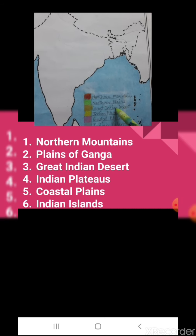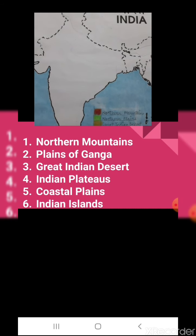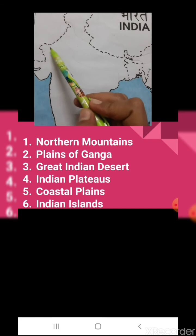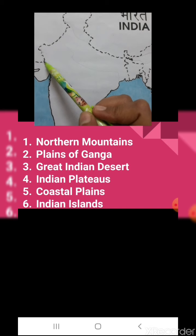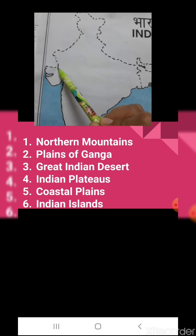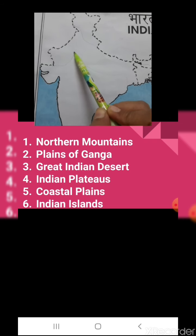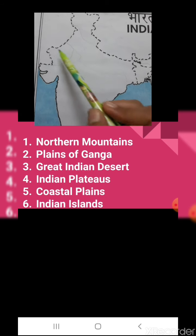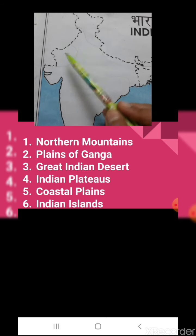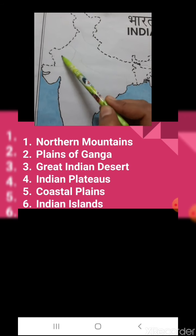Now we have great Indian desert — that is Thar desert. Thar desert is in which state? It is in Rajasthan. Rajasthan is here, and this is Gujarat. From this point draw till here — this is Thar desert. We have done three divisions now.